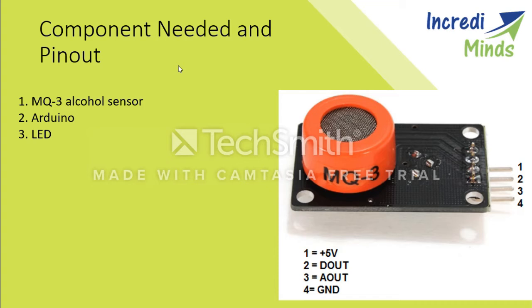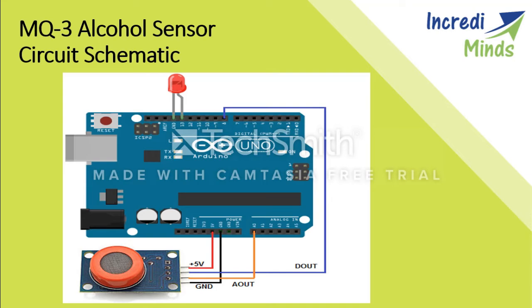For testing the alcohol sensor we need one MQ3 alcohol sensor, an Arduino, and one LED. This is the schematic diagram. The 5V pin goes to the 5V pin of the Arduino and the ground pin goes to Arduino ground. The analog output is connected to the A0 pin for analog input on the Arduino board. The digital pin goes to pin 8 of the Arduino. Pin 8 is connected to the anode (positive) of the LED, and ground is connected to the negative pin of the LED.